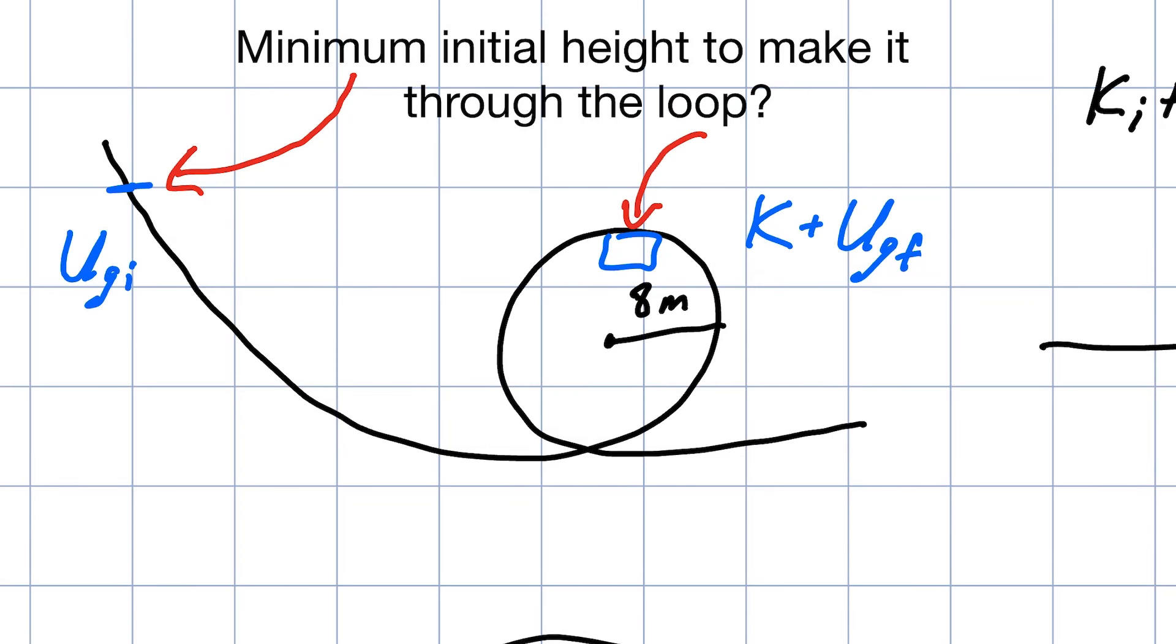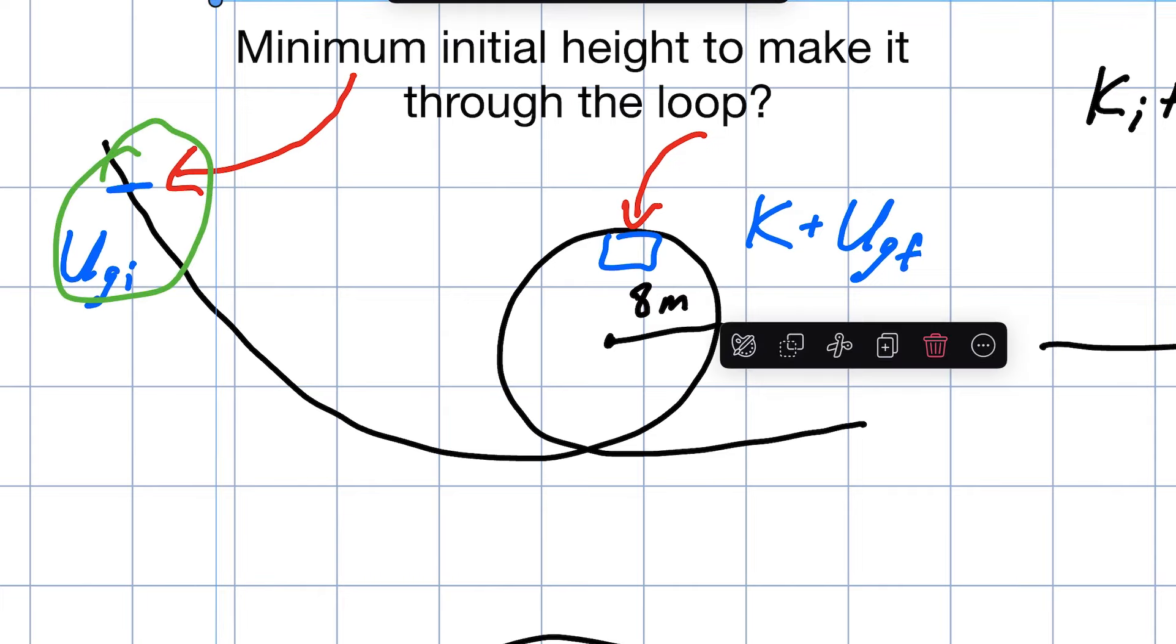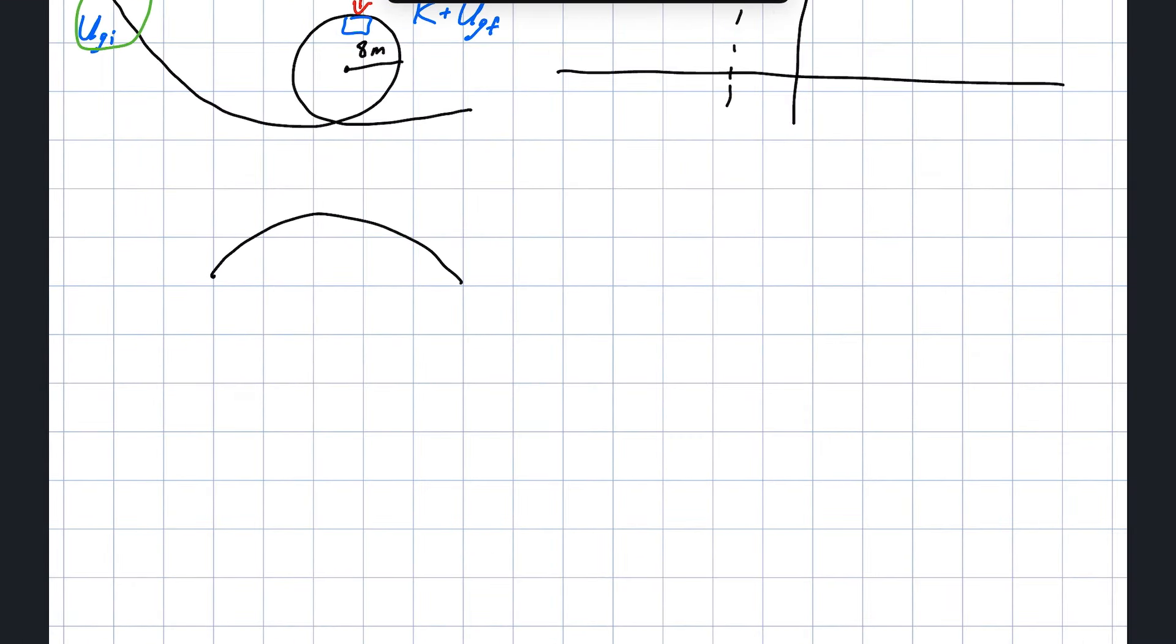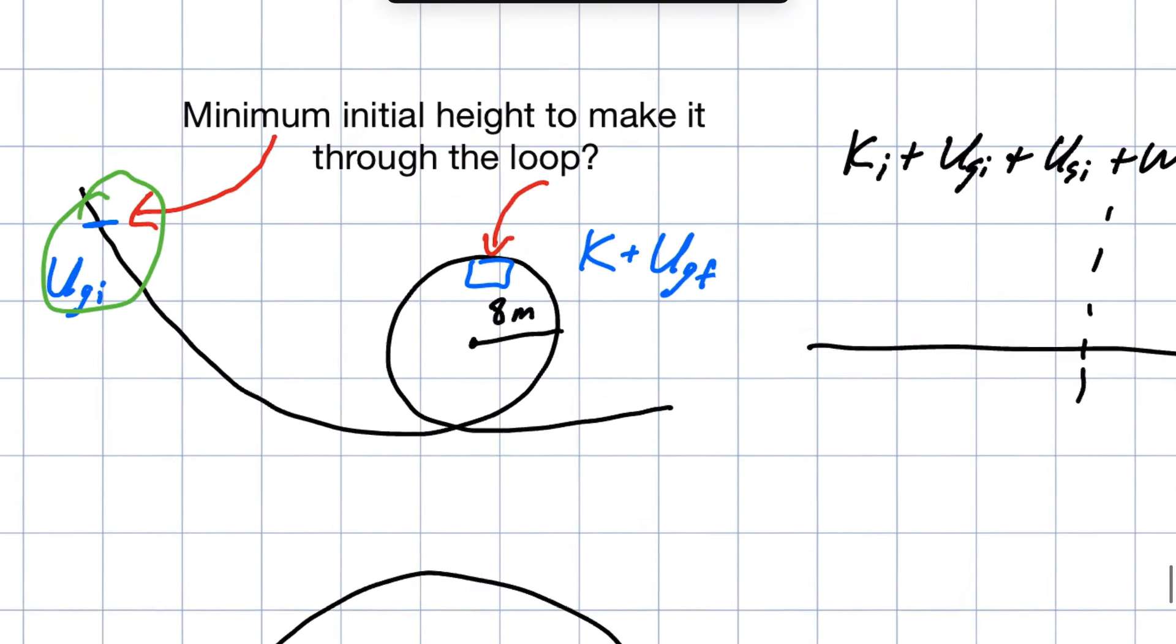So the first thing we have to do is look at the details and think to ourselves what are the energies that we have at each place. Our initial location is going to be this spot here. Let me highlight it for you here. This is our initial location and in this location we assume it's starting from rest and it's got gravitational potential energy because it has some height.